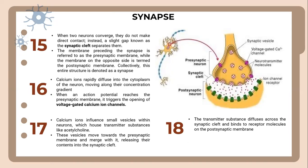Where adjacent neurons converge, they do not make direct contact; instead, a slight gap known as the synaptic cleft separates them. As you can see from this diagram, the membrane preceding the synapse is referred to as the presynaptic membrane and belongs to the presynaptic neuron, while the membrane on the opposite side is termed the postsynaptic membrane. Collectively, this entire structure is denoted as a synapse.